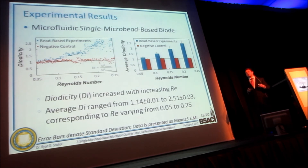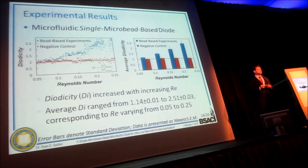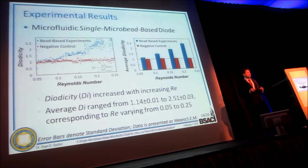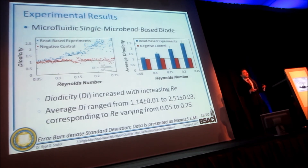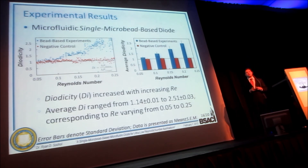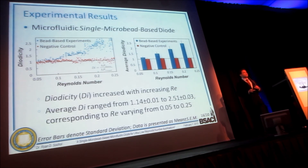These are our core experimental results across two sets of experiments: one with a single microbead in the diode (shown in blue) and one for a completely open system as a negative control. The main trend we found was that as the Reynolds number increased, so too did the diodicity. We were able to achieve average diodicities ranging from approximately 1.14 to 2.51 over a Reynolds number range of 0.05 to 0.25.